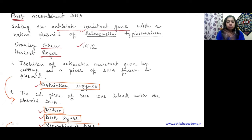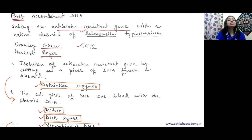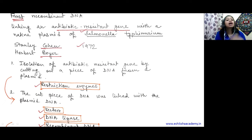So how do we cut the DNA to isolate the gene of interest? We use restriction enzymes. These are called restriction enzymes - another new term.